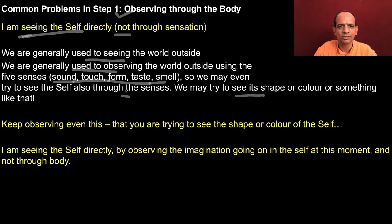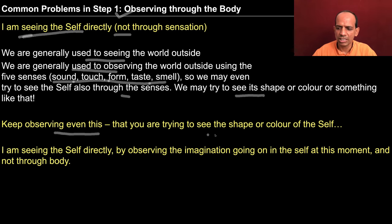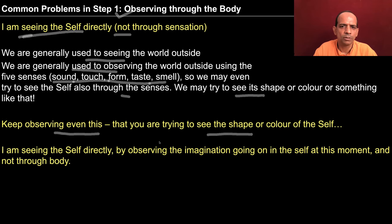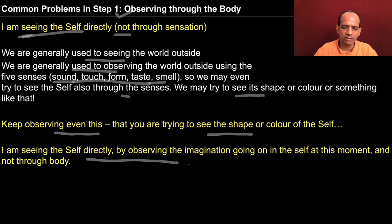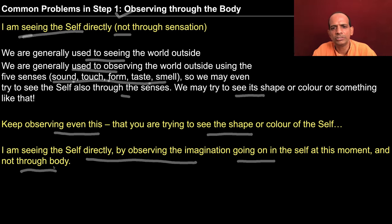Once it is clear that you don't require the body to observe your imagination, the tendency to observe through the body will be taken care of. Keep observing — even if you are trying to see the shape or color of the self, just observe your imagination and from there you will see it more clearly. I am seeing the self directly by observing the imagination going on in the self at this moment, and not through the body.